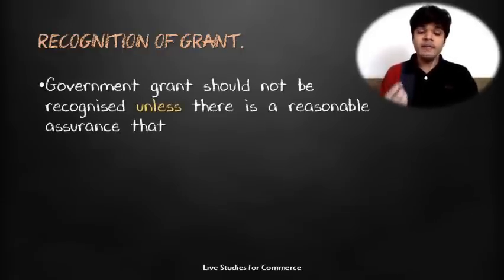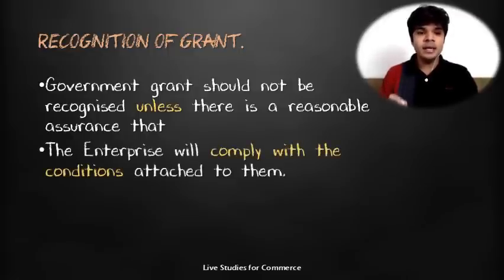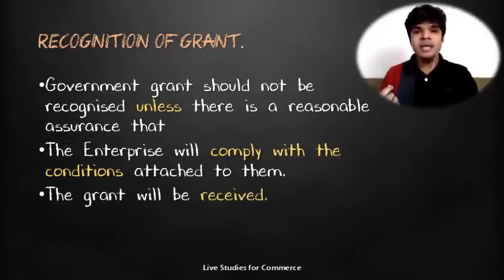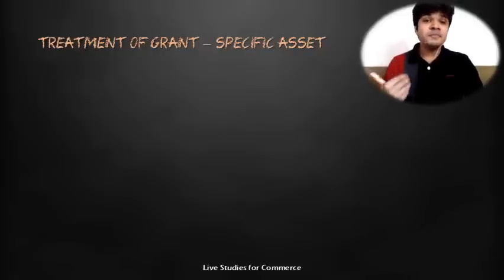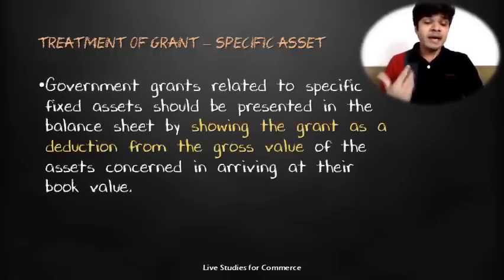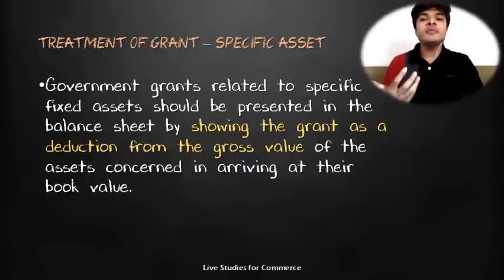Recognition of government grants should not be recorded unless there is a reasonable assurance that the enterprise will comply with all the conditions attached to them and the grant will be received. If a government grant has been received for a specific fixed asset, it should be presented in the balance sheet by showing the grant as a deduction from the gross value of the fixed asset.